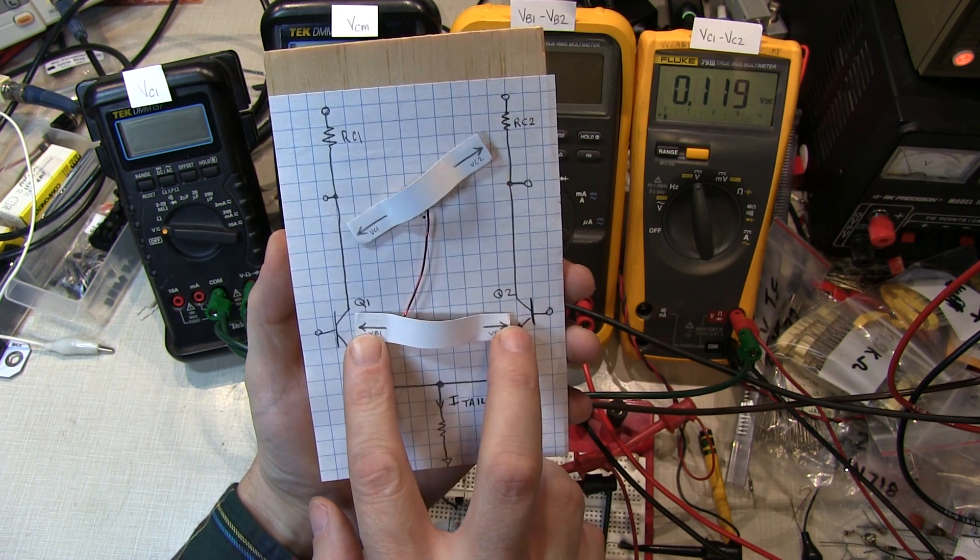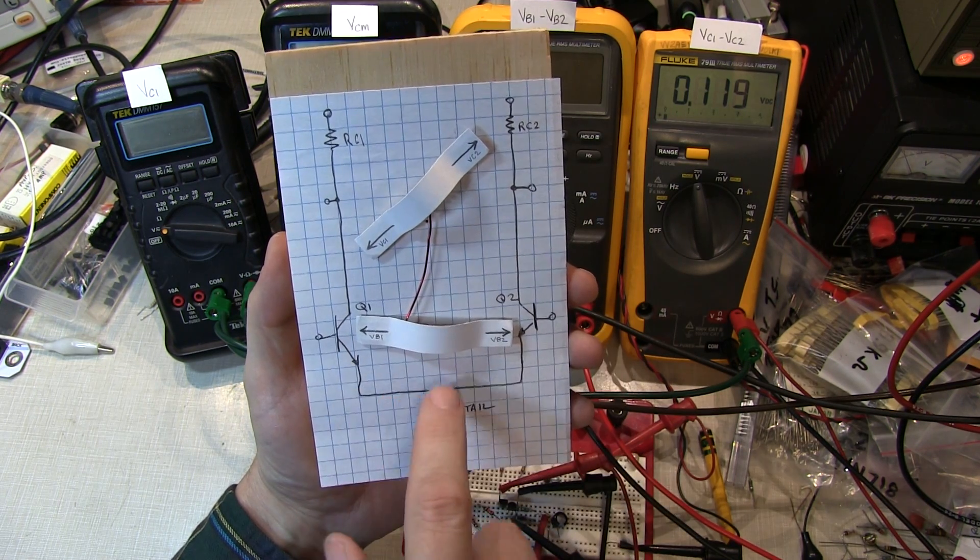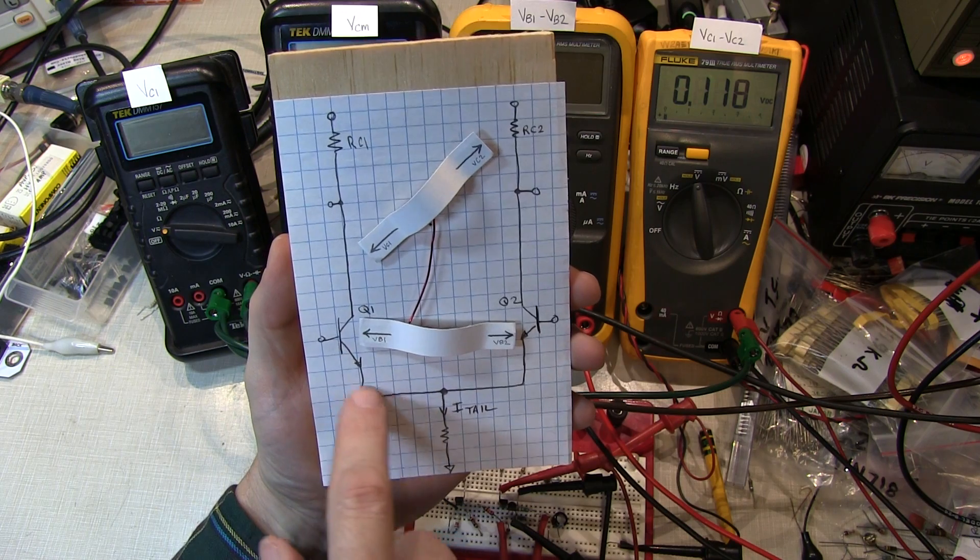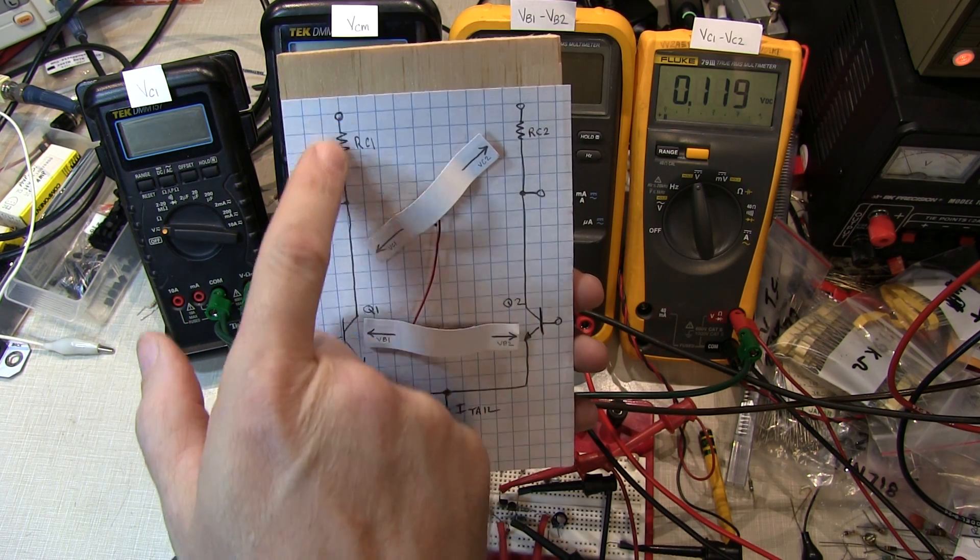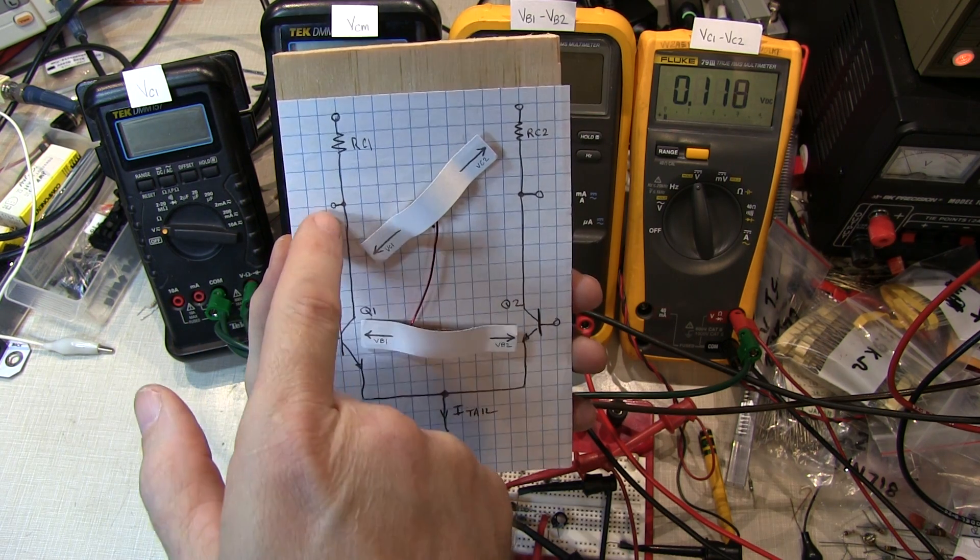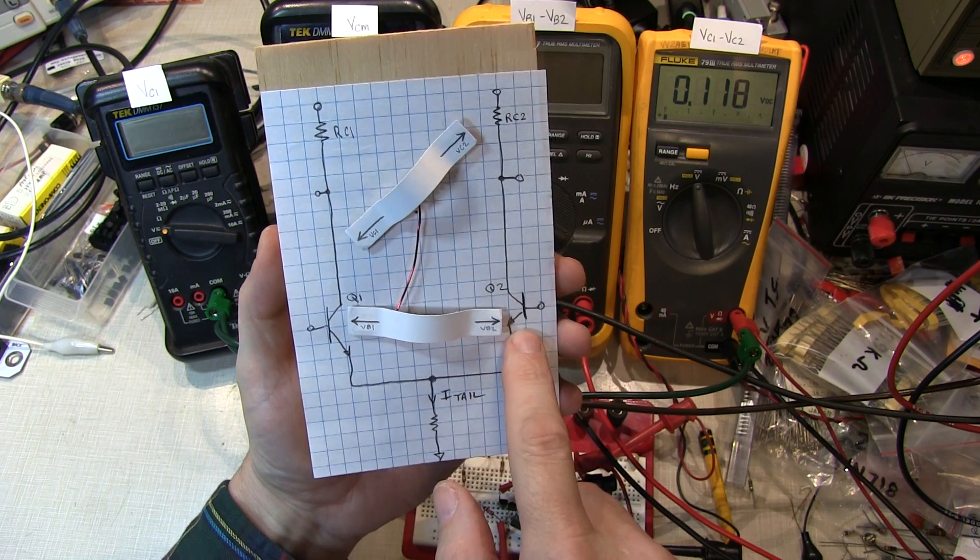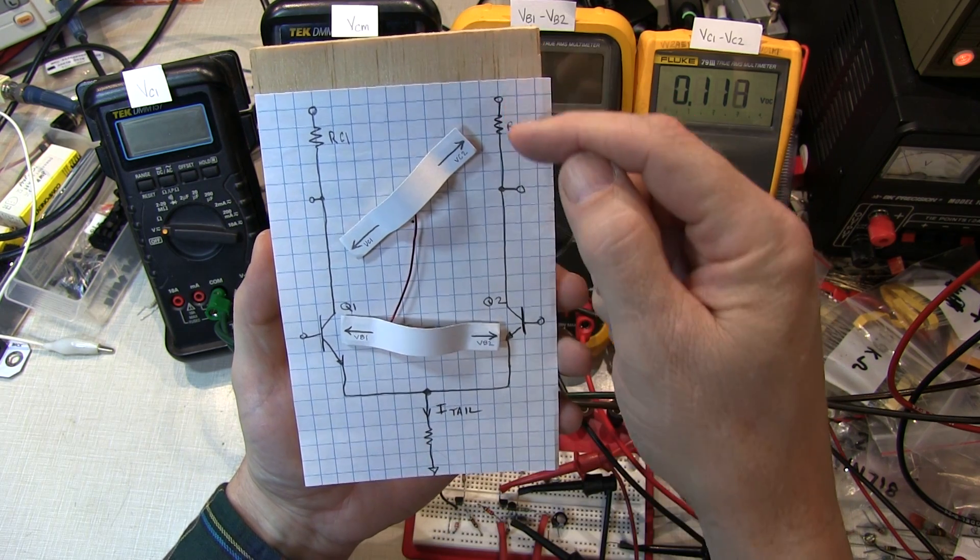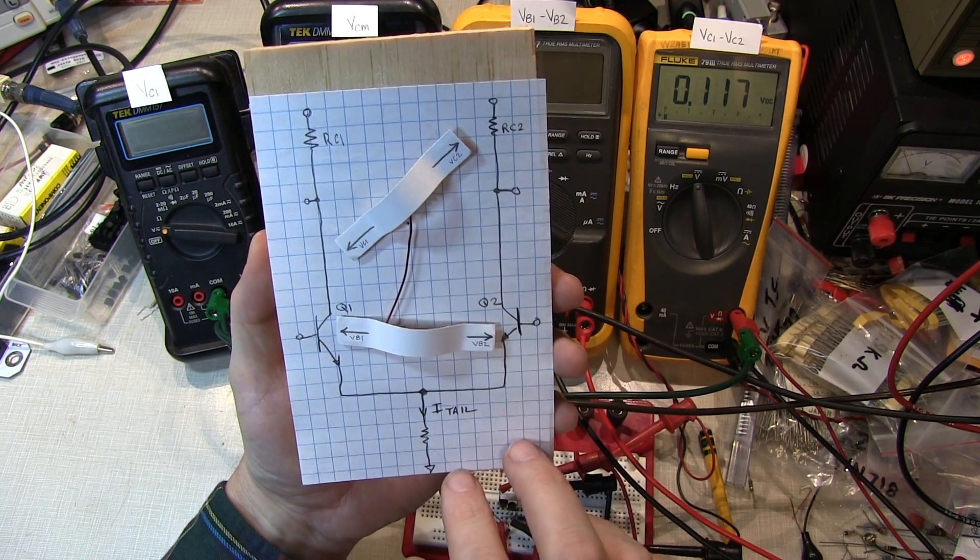But if VB1 goes up, then more of the current goes into Q1, dropping more voltage across R1 and this voltage drops. Less current is going into Q2, so we have less of an IR drop across R2 and its voltage goes up.